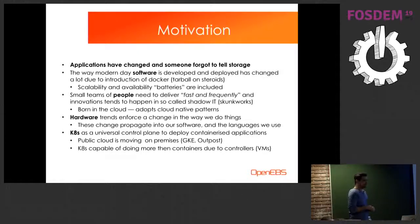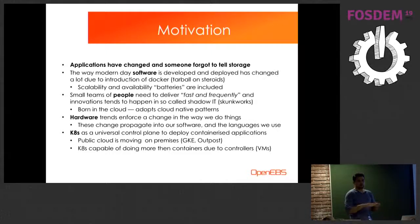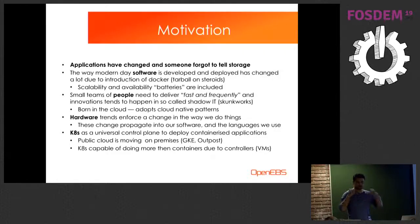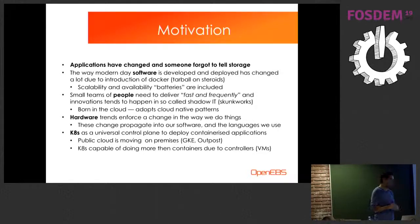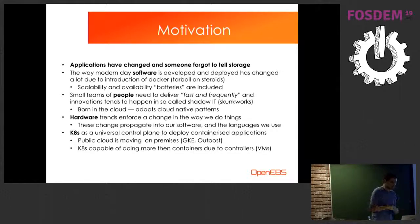Another important aspect is hardware — hardware trends enforce a change in the way we do things. You can see these trends propagate in all areas: in languages we use, we have concurrency primitives built in. In Go, for example, you just use 'go' and you don't need to create pthreads. There are even higher-level cloud-native languages like Meta Particle and Ballerina. And obviously Kubernetes as a universal control plane to deploy these things.